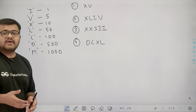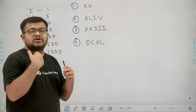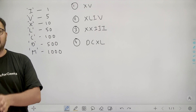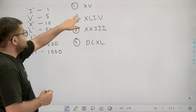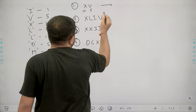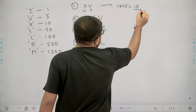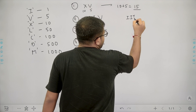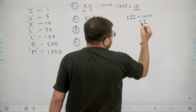When converting a Roman number to its decimal equivalent, we need to add up the values of the symbols. For example, X represents 10 and V represents 5, so XV is 15. We just add them up — as shown in the example, III is 1 plus 1 plus 1, which equals 3.